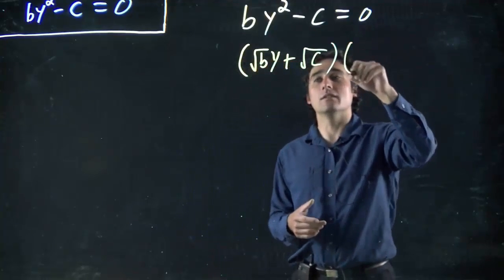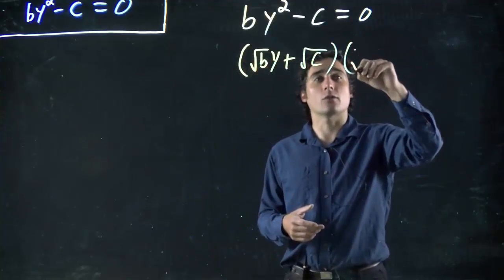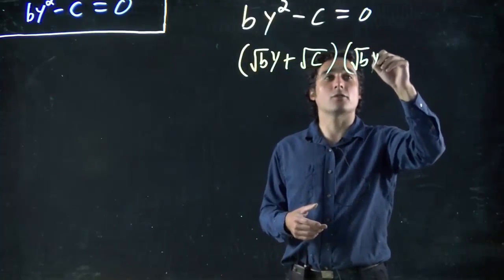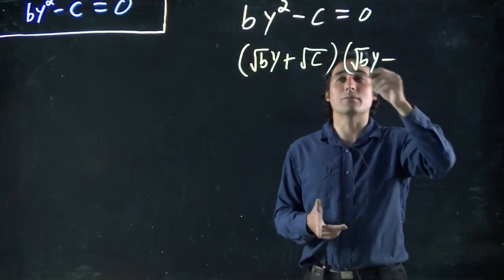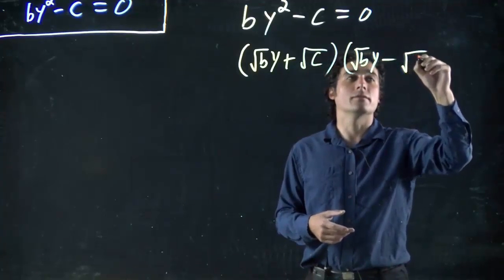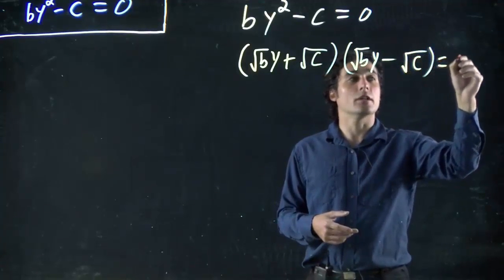Then it's going to be the square root of the first, so again square root of b. Once you figure out the square root of both things you're basically done the problem, because then it's minus the square root of the other. All equal to 0.